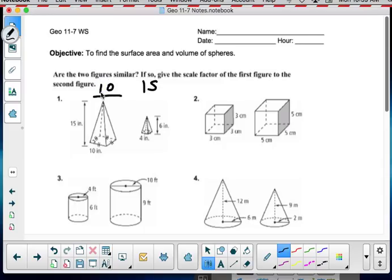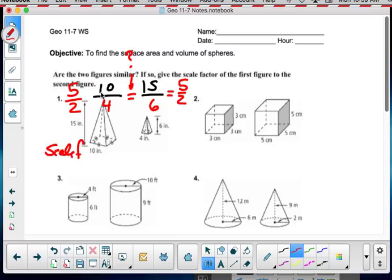10 and 15 are on top. In this other one, I've got my side measure of 4, my height 6. These should be similar. I'm wondering, are they? 10 to 4 reduces to 5 to 2. This also reduces to 5 to 2. So the scale factor is the same. Therefore, the two figures are similar.